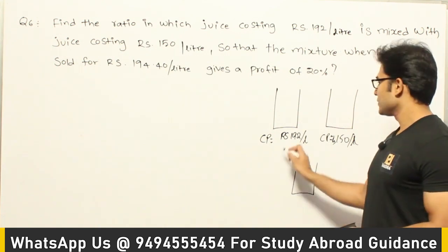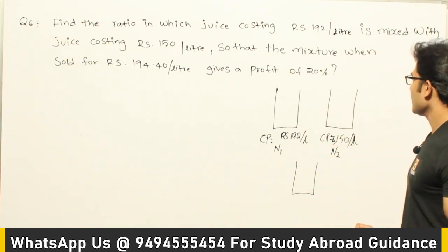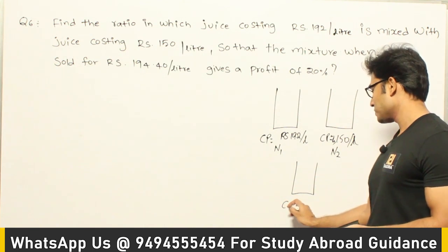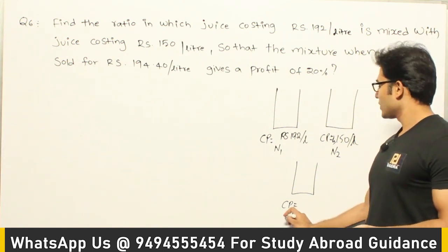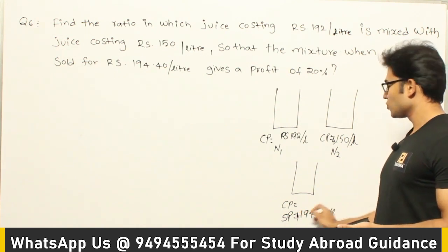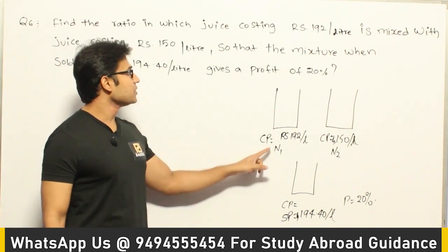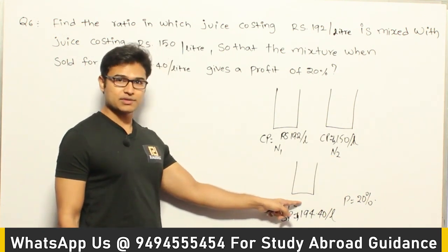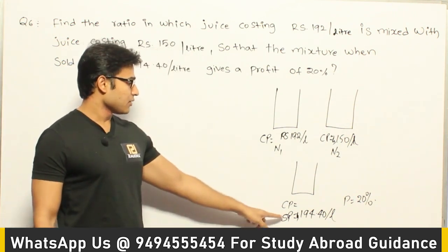These two juices are mixed in some ratio which we don't know. Let us assume n1 parts of the first juice and n2 parts of the second juice are taken and mixed. When the mixture is sold, we get some cost price for it. They are saying the mixture is sold at 194.4 rupees per litre making a profit of 20%. We need to find the ratio of n1 and n2, which requires us to first find the cost price of the mixture.